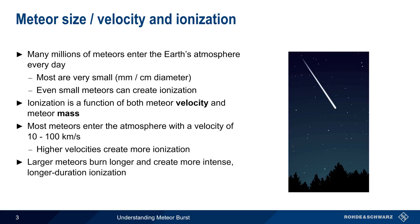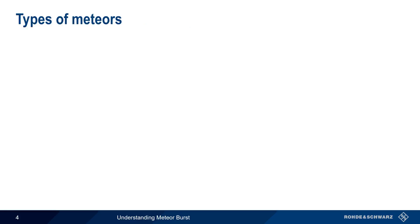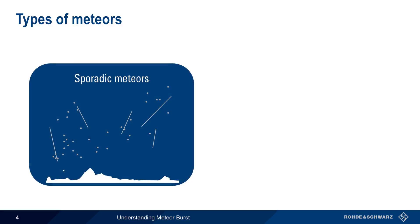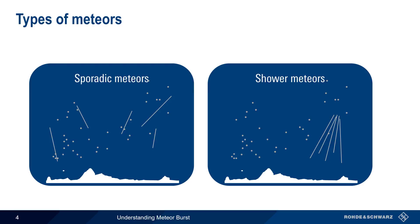Larger meteors burn for a longer period of time, and thus create more intense, longer duration ionization. Meteors can be grouped into two general categories. The first of these is sporadic meteors, and the second are meteors which occur as part of a so-called meteor shower. The way in which meteor trails are used for communications depends in part on which type of meteors created them. Let's start by looking at sporadic meteors.